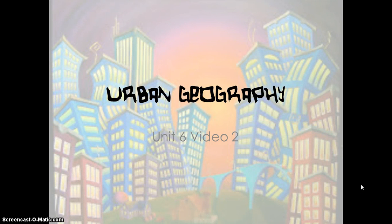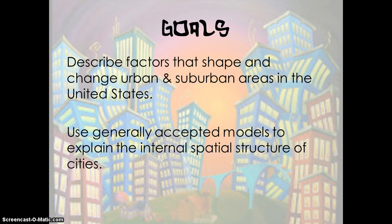Geography, Unit 6, Video 2 on Urban Geography. Let's take a look at our goals for this video. Our goals are to be able to describe factors that shape and change urban and suburban areas in the United States, and to use generally accepted models to explain the internal spatial structure of cities. We are going to look at some terminology that you will need to achieve these goals for the unit.